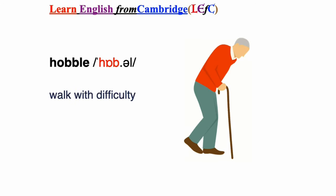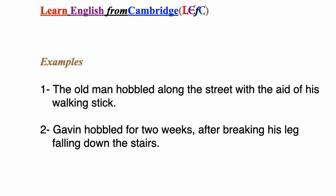Hobble: to walk with difficulty. Examples: The old man hobbled along the street with the aid of his walking stick. Gavin hobbled for two weeks after breaking his leg falling down the stairs.